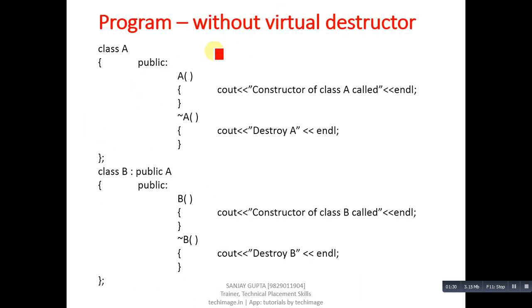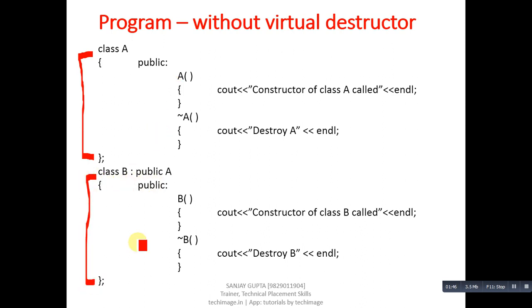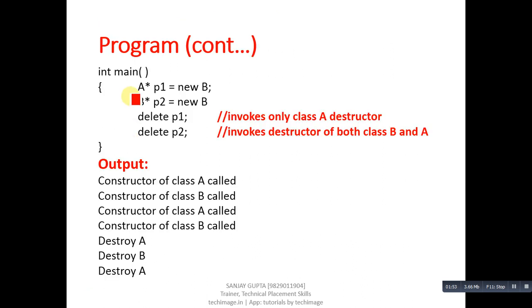First, I am going to explain an example which does not implement a virtual destructor. Class A contains a constructor and destructor, and it is inherited by class B, which also defines a constructor and destructor. In the main function, two pointers are created — one for the base class and one for the derived class. The base class pointer is allocating memory for a derived class object.